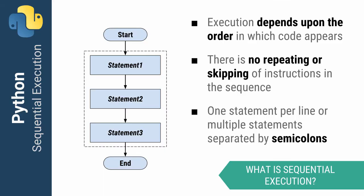Let's begin by talking about sequential. Sequential is just like what it sounds like — it's one statement executed after another without skipping any of the instructions at all. Remember, in Python you can put one statement per line or multiple statements if they're separated by semicolons.